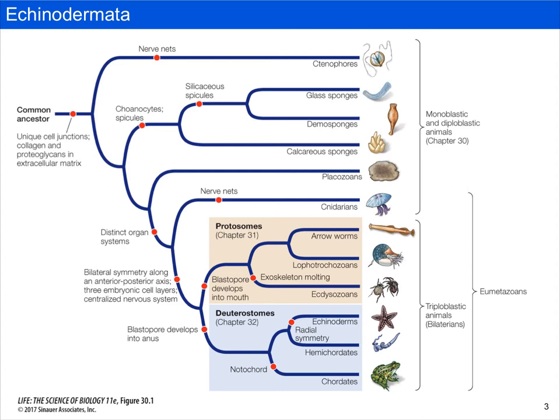Recall that thus far, we've gone over several groups on the metazoan phylogeny. We've covered ctenophores, the Porifera or sponges. We've also talked about the Placazoa just very briefly, of course the cnidarians, and recently we've been exploring the Bilateria. We've talked about the protostomes in some depth, and now we are going on to the deuterostomes.